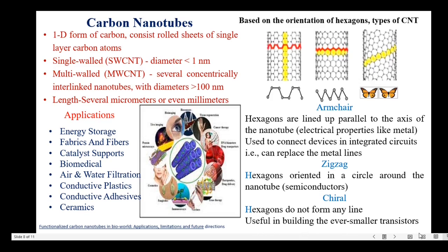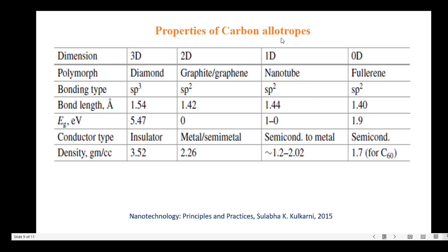Next, let us see the properties of carbon allotropes. The different carbon allotropes show different properties. The bond length for diamond is 1.54 Å, for graphene it is 1.42 Å, the carbon nanotube bond length is 1.44 Å, and fullerene has a bond length of 1.40 Å. The band gap energy of diamond is 5.47 electron volts, making it an insulator. Graphene is a zero band gap material, behaving like a metal or semi-metal. The band gap of carbon nanotubes is about 1 electron volt, while fullerene has a band gap of 1.9 electron volts.